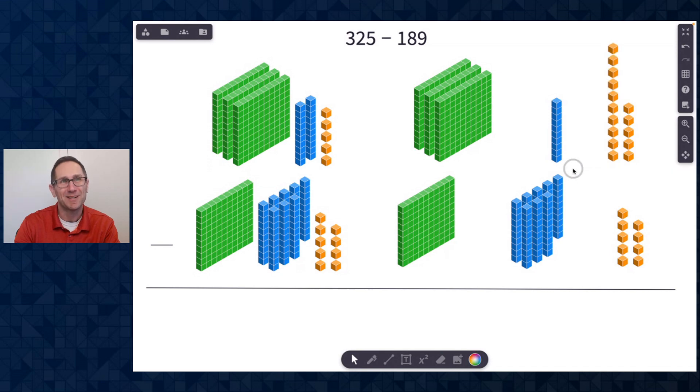Move it over here and click split in the action bar. And when I split that, it becomes 10 ones. So now I have 10 and five and nine over here.